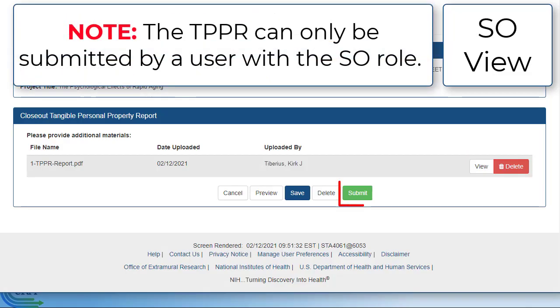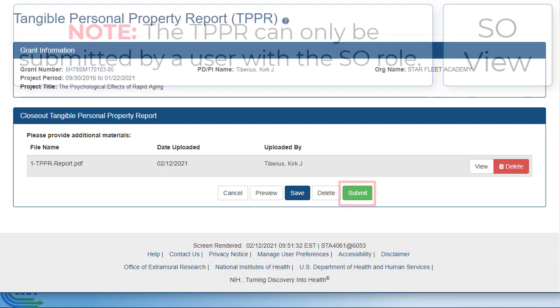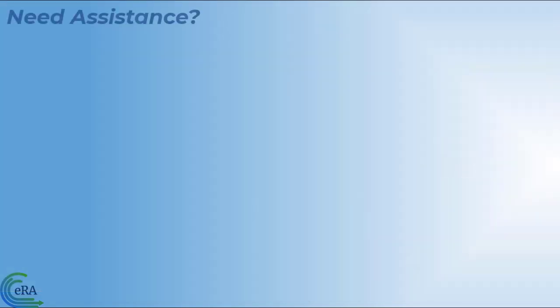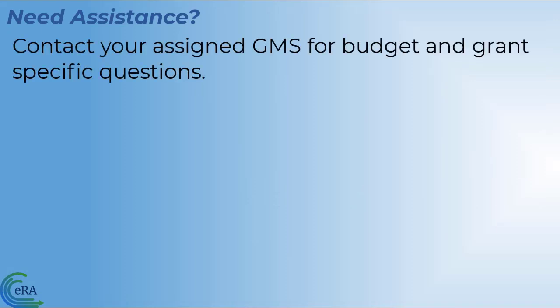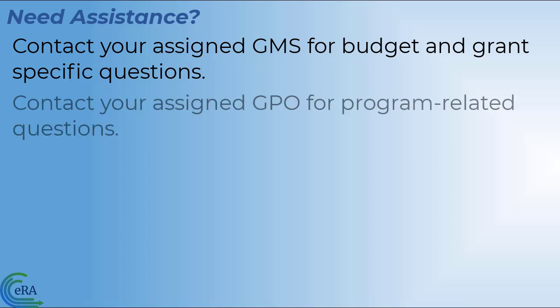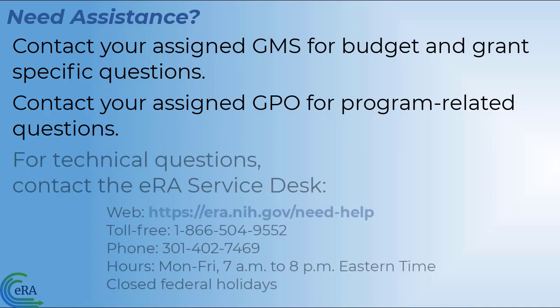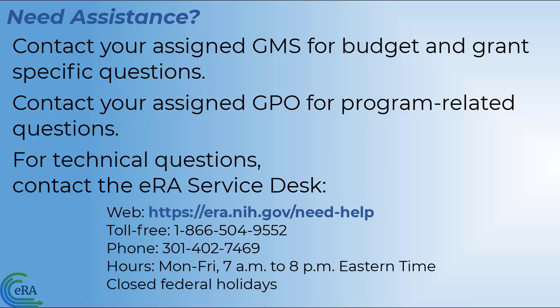Please note that the Tangible Personal Property Report can only be submitted using the account with the ASSO credentials. If you need additional assistance, you can contact your Assigned Grants Management Specialist (GMS) for budget and grant-specific questions, your Assigned Grants Project Officer (GPO) for program-related questions, and for technical questions, contact the ERA Service Desk.